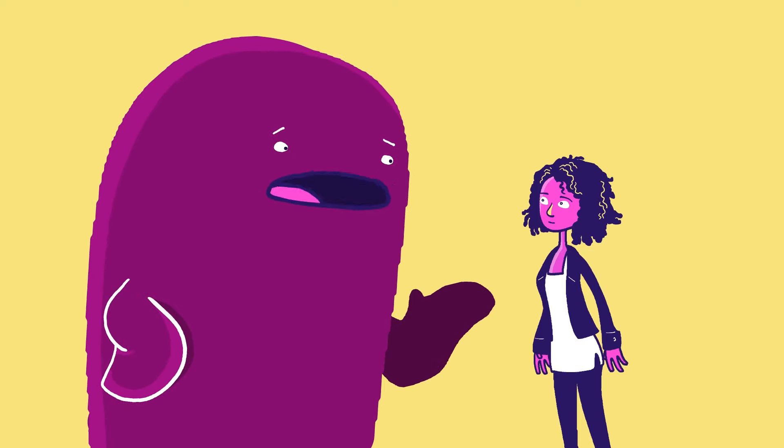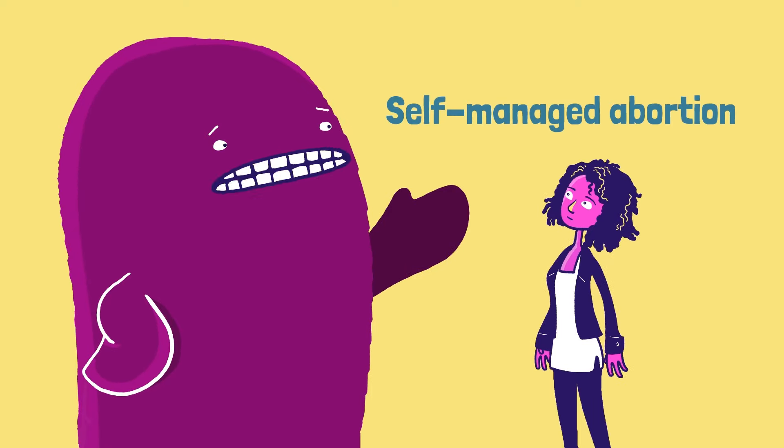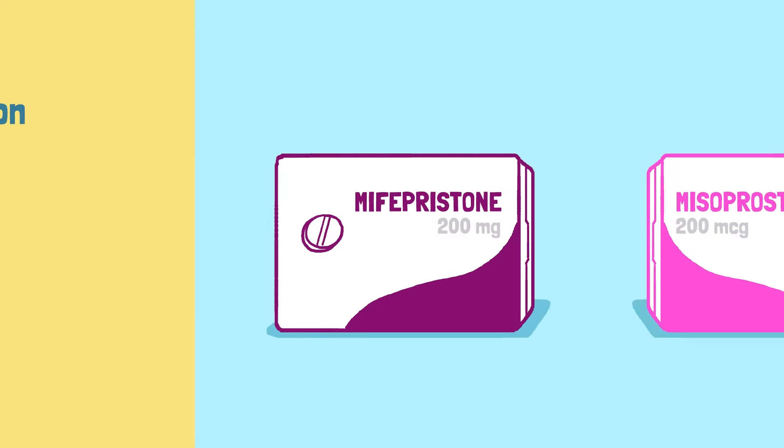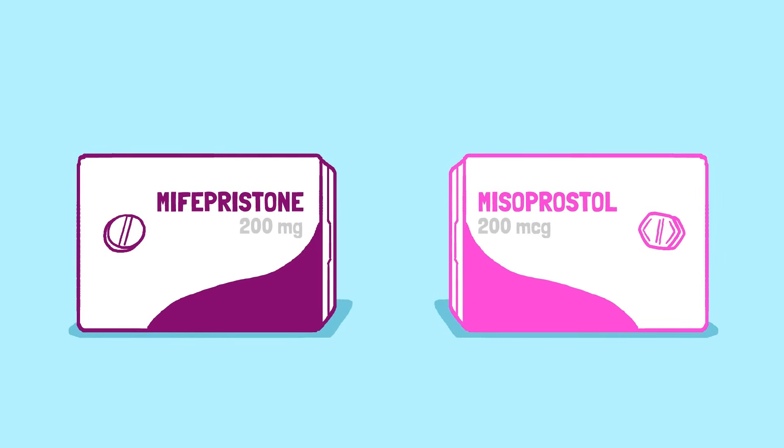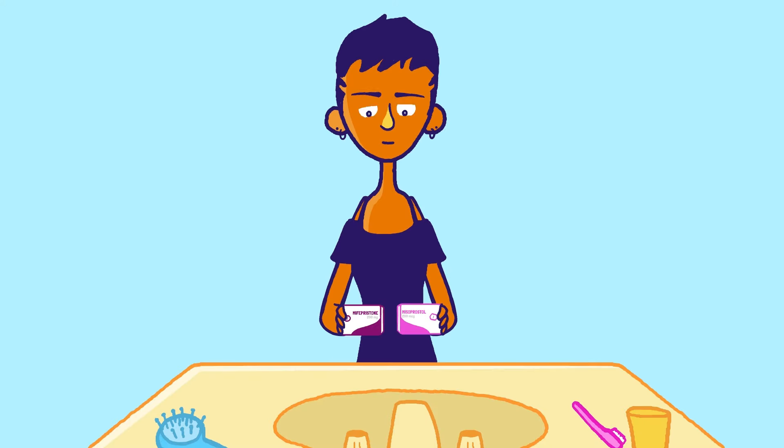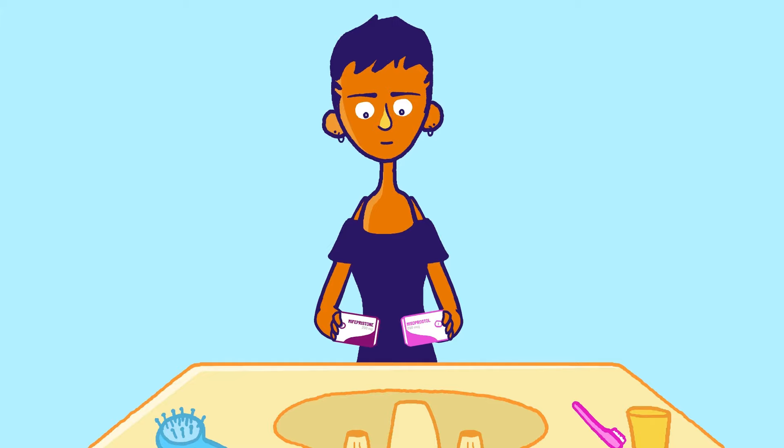Another type of medication abortion is called a self-managed abortion. What's that, you ask? Well, it works like this. Remember those pills we were just talking about? Mifepristone and misoprostol? With a self-managed abortion, a person gets either both of these pills or just misoprostol alone, which can be just as effective, without the help of a medical provider or health clinic.